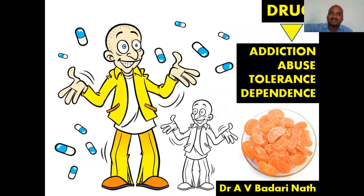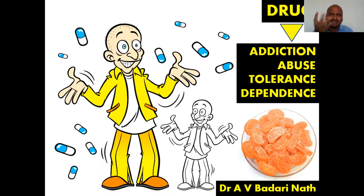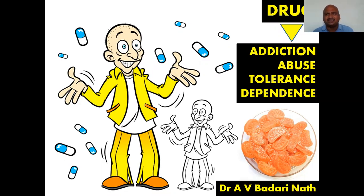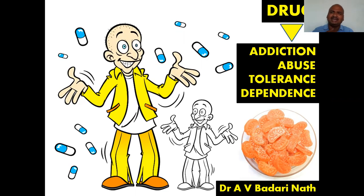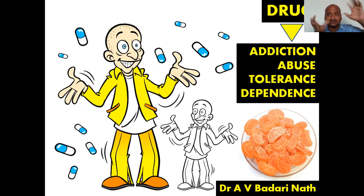Hi students, this is Dr. Badrinath. Today's topic is drug addiction, abuse, tolerance, and dependence. Here 'drug' means medicine — not morphine, cocaine, or heroin. Some people take drugs like peppermints or candy, regularly taking 10 tablets morning, afternoon, and evening — taking tablets whenever they want, unnecessarily. There are four terms: drug addiction, drug abuse, drug tolerance, and drug dependence — all are confusing.